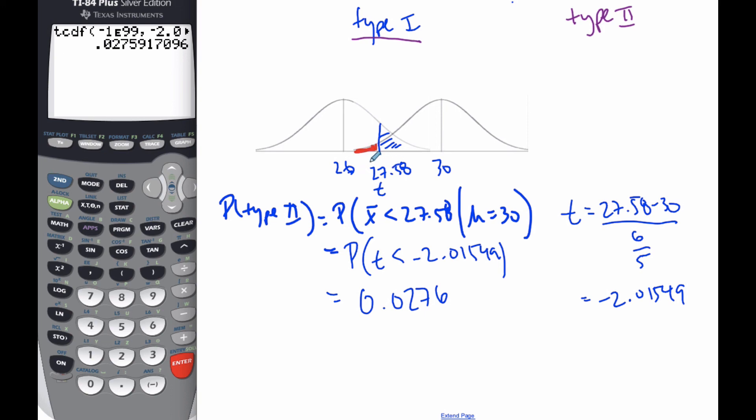You have to change the 27.58 to a t value from the 30-degree t distribution. I want you to independently do the Type 2 error for when α = 0.01. Do the second part. When you're done, you can check your answer—the probability should be 0.204.